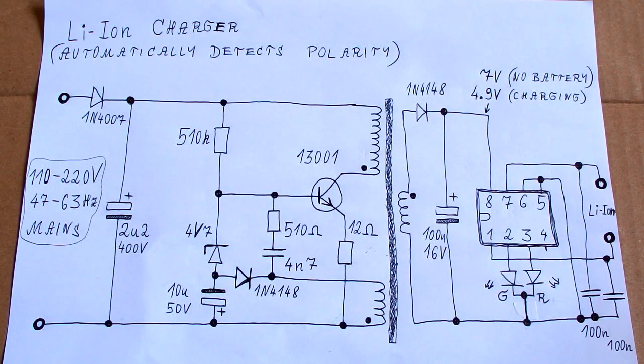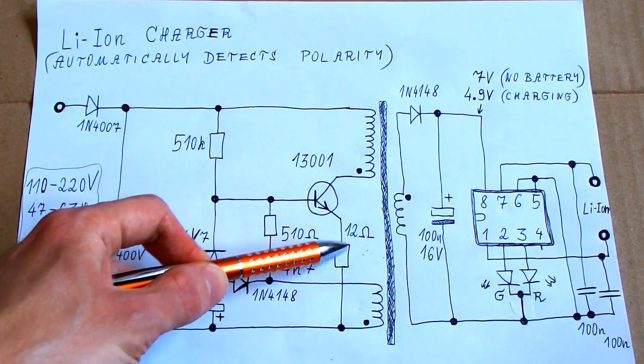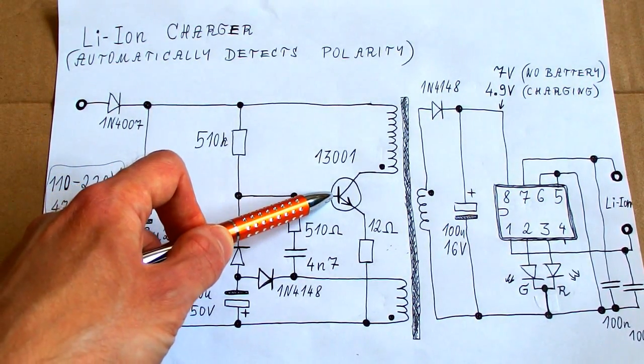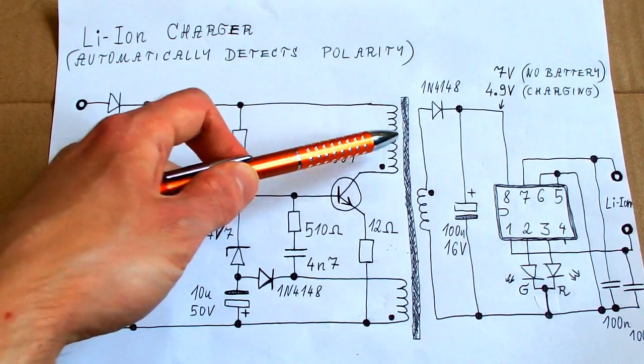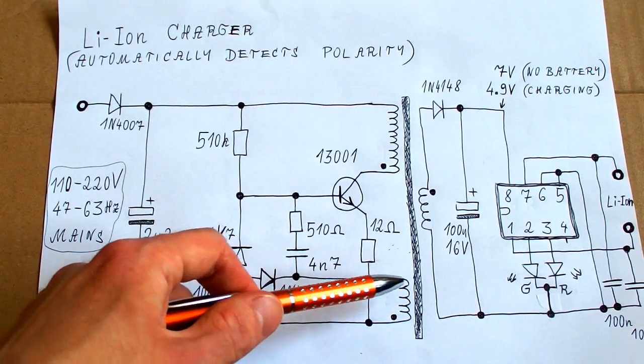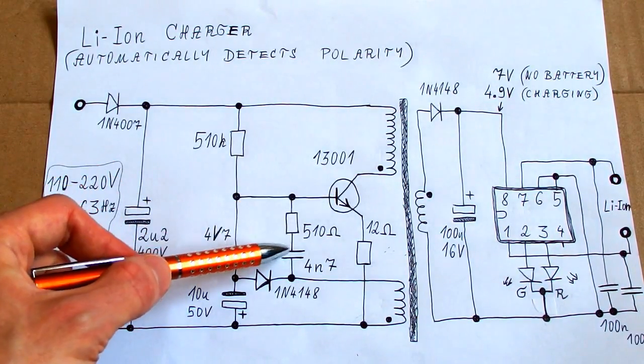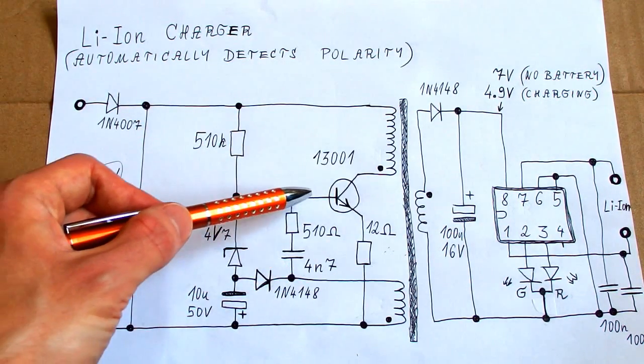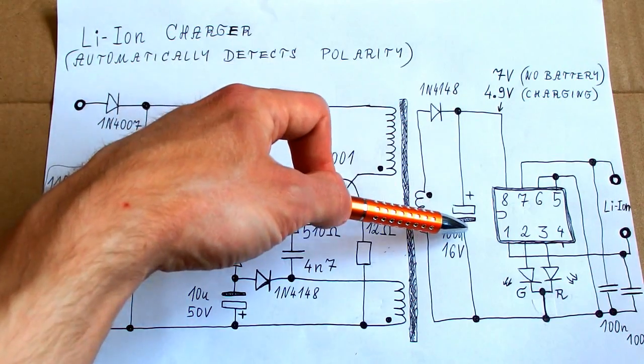So here's the schematic and it's really super simple and clever. The mains comes in, it's rectified by this diode and filtered by this capacitor. Then it goes into a super simple switching power supply with just one transistor. Here it has a startup resistor. This resistor will supply a small current into the base of the transistor. The transistor will partly open and it will energize the primary of the transformer. And so a voltage will appear on this auxiliary winding. It will supply more current into the base and the transistor will completely open. It will stay opened until this capacitor discharges. And then the transistor starts closing and because of the positive feedback, it will close quickly. The cycle repeats and it's oscillating very quickly.